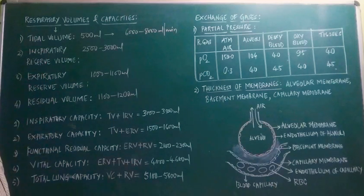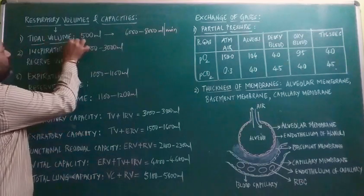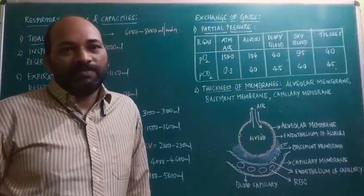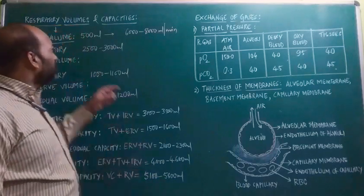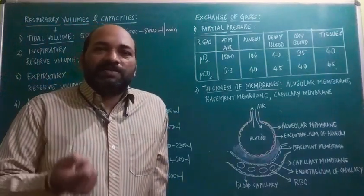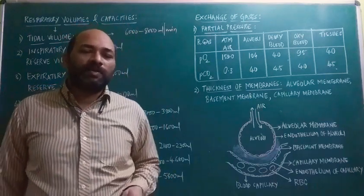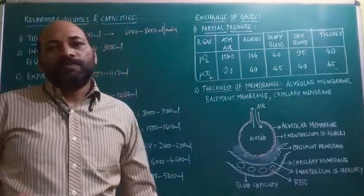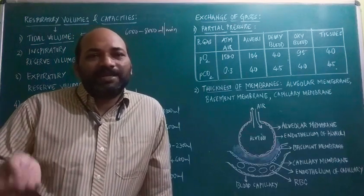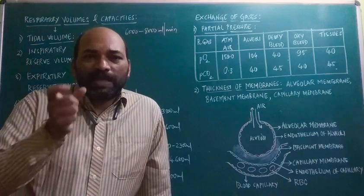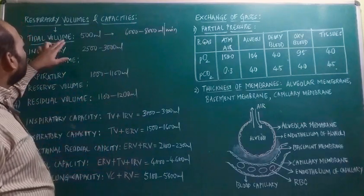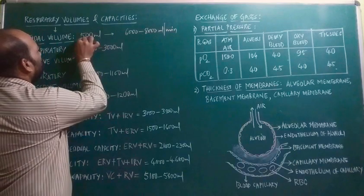The first respiratory volume is tidal volume — the volume of air a person can inspire or expire during normal respiration. It is around 500 ml. For example, when we are sitting idle, respiration occurs continuously — we are unknowingly inhaling and exhaling air. The volume of air which comes in or goes out during normal respiration is the tidal volume, which is around 500 ml.